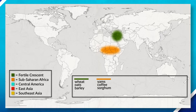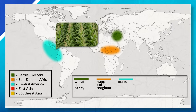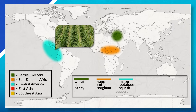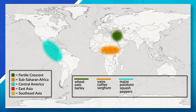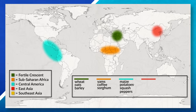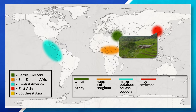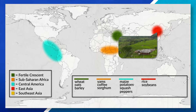Continuing our move west, we have our next hearth, which is located in Central America. Here we have maize, potatoes, squash, and peppers, which first diffused through North and South America. Moving over to Asia, we have our next hearth, which is located in East Asia. Here we have crops such as rice and soybeans, which diffused through Japan and Korea.